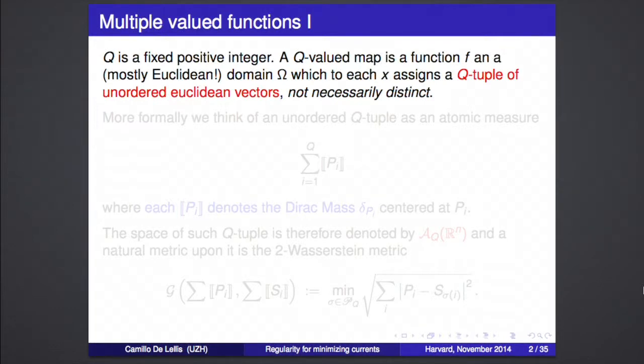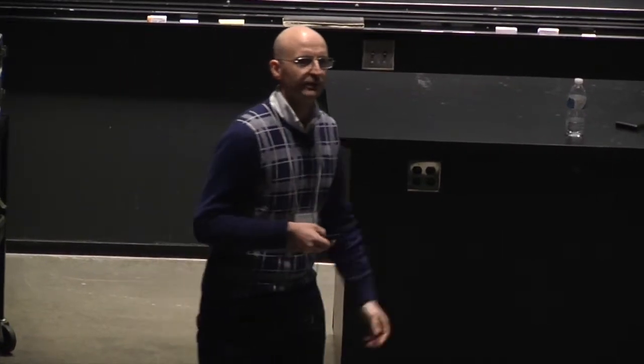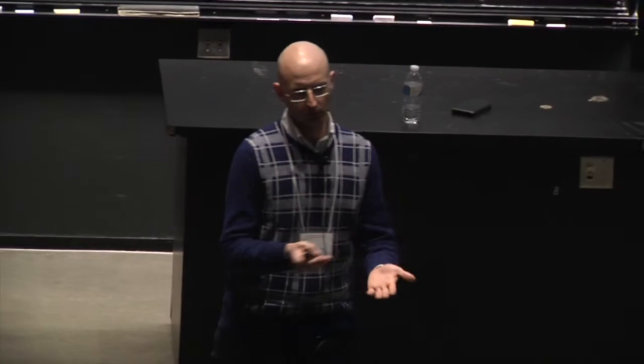And then there is a third part in which we want to construct the center manifold, which is the average of the singular sheets. Then we want to see how from the center manifold we approximate again the current and find the contradiction if there are too many singularities in the current.